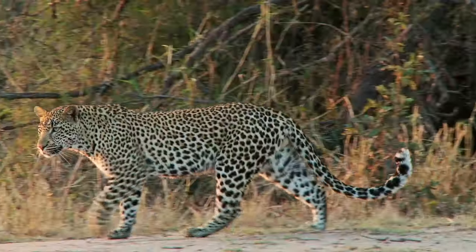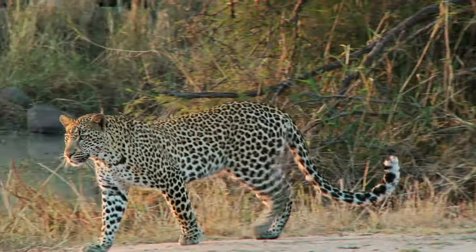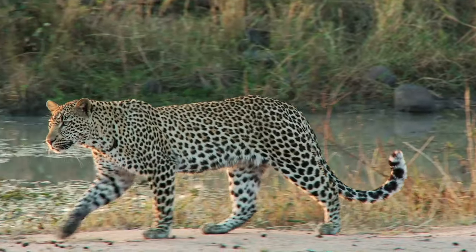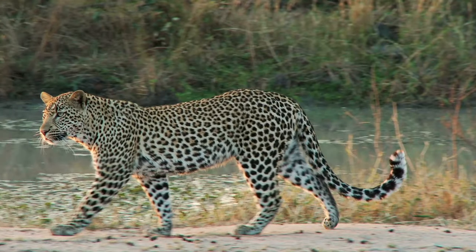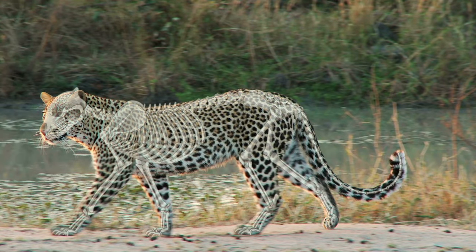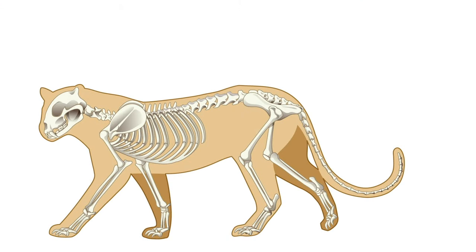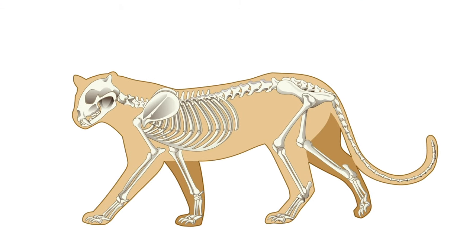All animals are classified in two main groups depending on whether or not they have a backbone. A backbone is a series of connected bones that run down the centre of an animal's back.